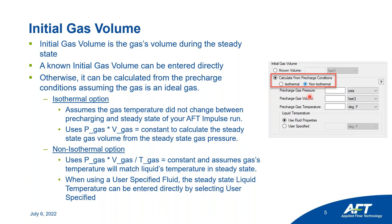We have pre-charge gas pressure, pre-charge gas volume, and pre-charge gas temperature to enter as inputs. You have to enter all three if you're doing the non-isothermal option, which assumes ideal gas and uses the equation P times V over T equals constant. If you don't know the pre-charge temperature, you can assume isothermal to get an estimate and just use the pressure and volume of the gas at pre-charge.